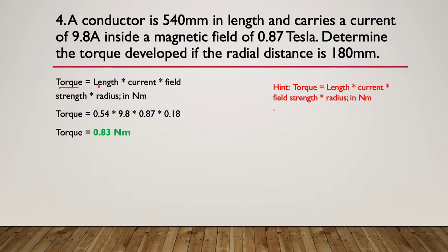Torque equals length multiplied by current multiplied by field strength multiplied by the radius. So torque, 0.54 comes from up here, remember it was given to us in millimeters but we're going to need it in meters in our formula. The next thing, current was already in amps so 9.8 amps. Our teslas was already in teslas so 0.87, but our radial distance was 180 millimeters so we need to put that into meters giving us 0.18. We multiply all of those together and we have a torque of 0.83 newton meters.